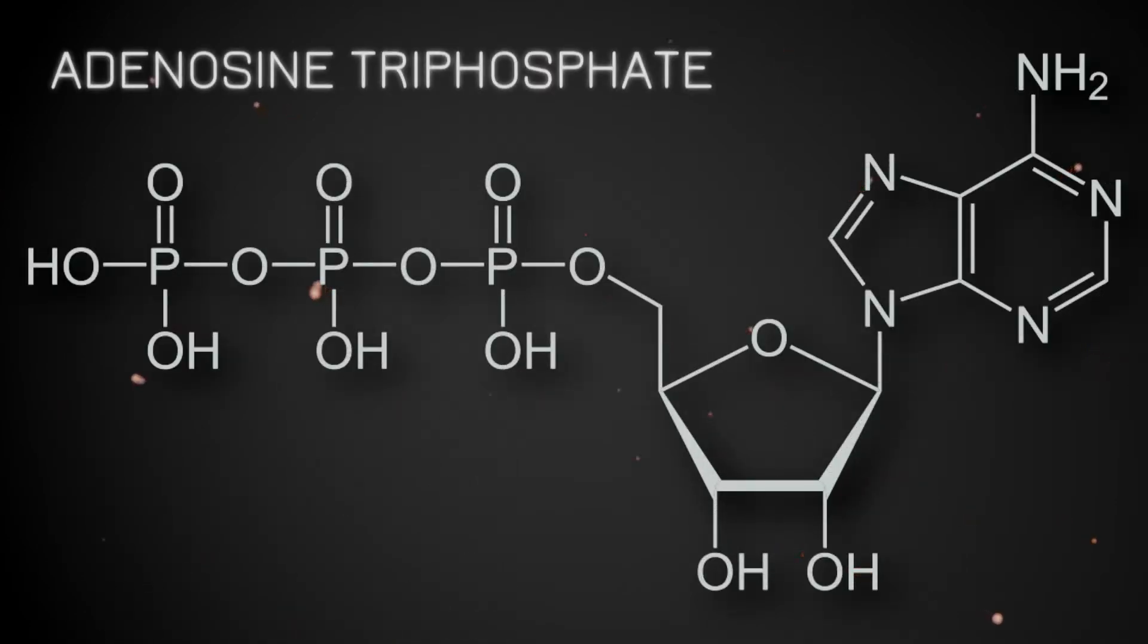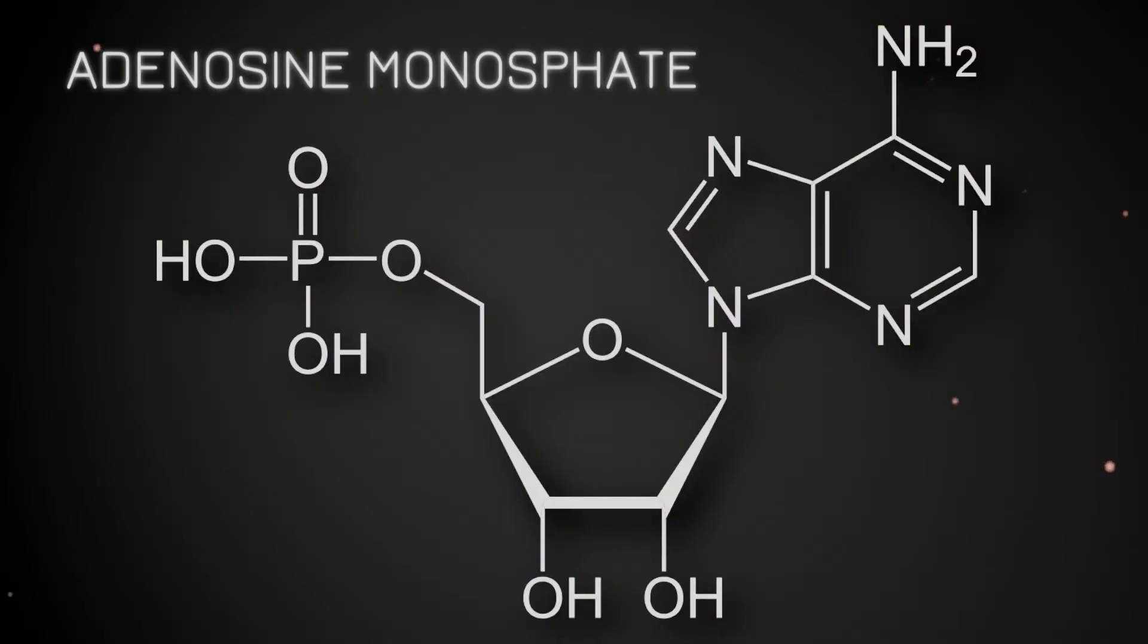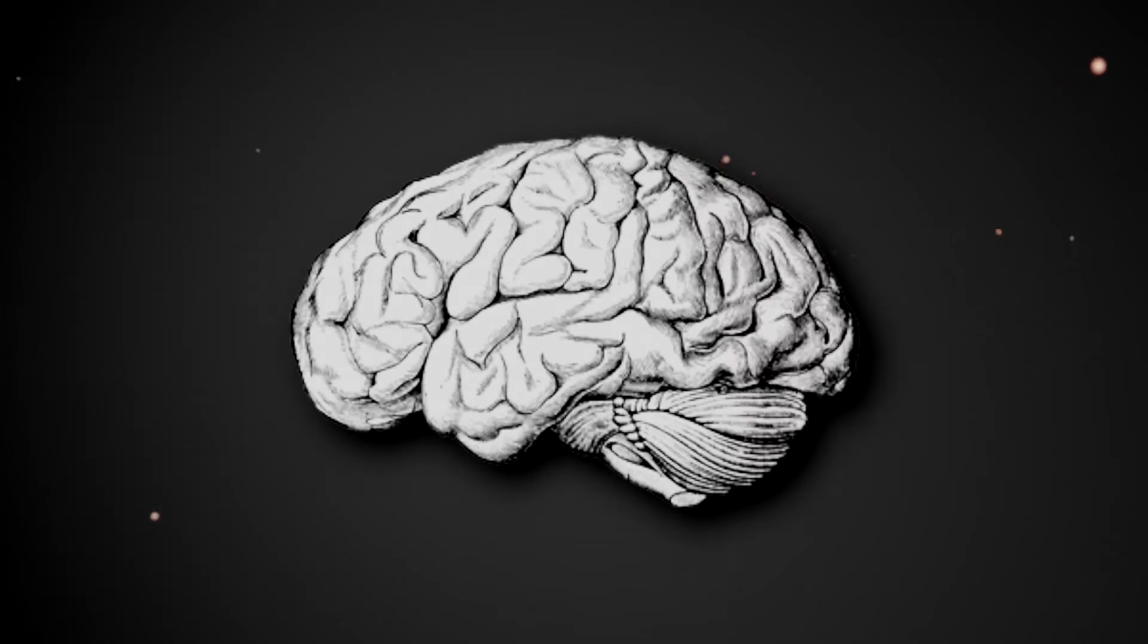ATP is how your body stores energy and what keeps our biology running so smoothly. It can be found in every cell of your body, and without it, you would die. However, when ATP is metabolized, a natural byproduct is pure adenosine. The more ATP your body consumes, the more adenosine will be produced.